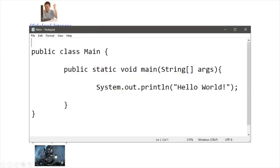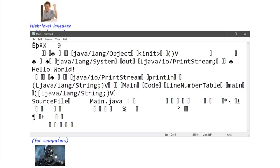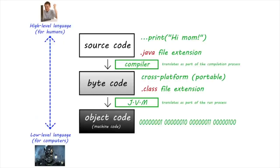Here's an example of Java source code, and here's that same source code after we compile it to bytecode. Since bytecode is cross-platform, you could write your code on a Mac and then send your bytecode file to your friend, who can run it on their PC using a JVM to translate the bytecode to machine code.